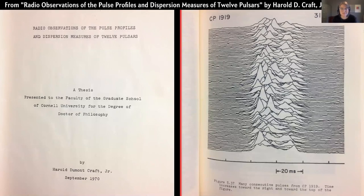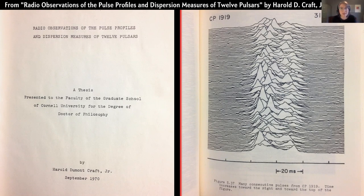So what does the chart really show? The answers lie in the primary source: a 1970s PhD dissertation by Cornell University astrophysicist Harold D. Craft. These lines represent incoming radio waves from pulsar CP 1919, as detected at Arecibo Observatory in Puerto Rico. Time for each line reads from left to right. 80 successive pulses are stacked from bottom to top. Peaks represent relatively strong radio signals. This particular plot shows data collected at a frequency of 318 megahertz.